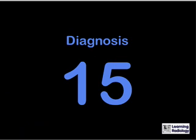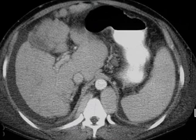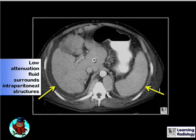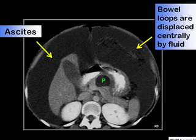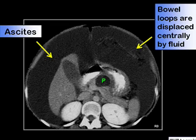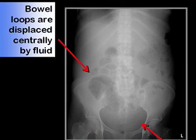This is Diagnosis 15, the last in this podcast. Why does this 47-year-old have increasing abdominal girth? There is low attenuation material surrounding the intraperitoneal structures like the liver and spleen. The C represents an enlarged caudate lobe of the liver, and this patient has ascites from cirrhosis. Another example shows more massive ascites with bowel displaced away from the abdominal wall by the fluid. P represents a pancreatic pseudocyst in this patient who had pancreatitis.